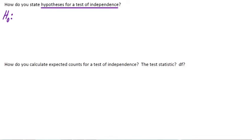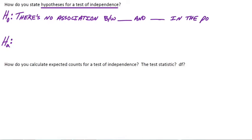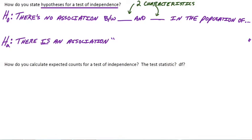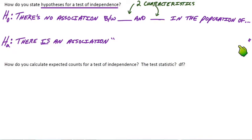What are the hypotheses going to look like when we do a chi-square test of independence? The null is going to say there's no association between whatever the two characteristics are for our population. The alternative says the opposite — there is an association between those two characteristics for our population. For example: there's no association between eye color and IQ in the population of Lake Park High School West Campus students. The alternative would be there is an association between eye color and IQ in that population.